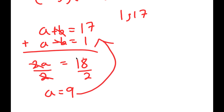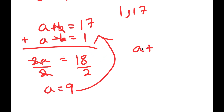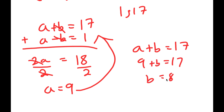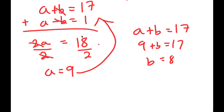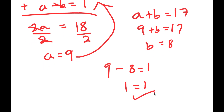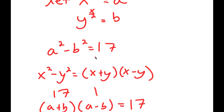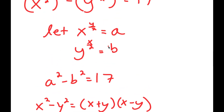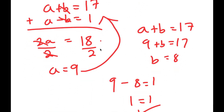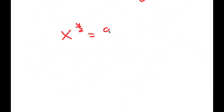Now I can plug a equals 9 back into a plus b equals 17. That gives 9 plus b equals 17, meaning b equals 8. So a equals 9 and b equals 8. We can verify: a minus b is 9 minus 8, which equals 1. Now, recalling that we let x to the power of y over 2 equal a and y to the power of x over 2 equal b, we have x to the power of y over 2 equals 9 and y to the power of x over 2 equals 8.